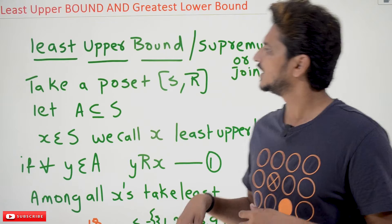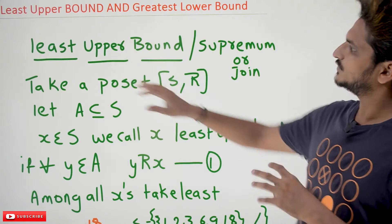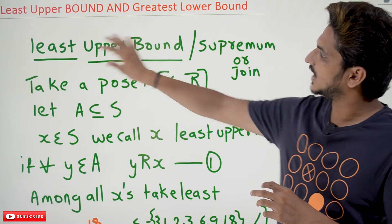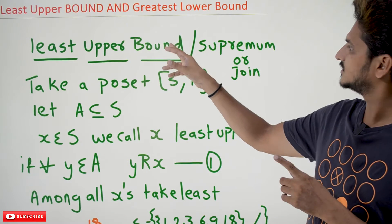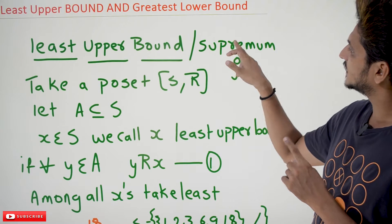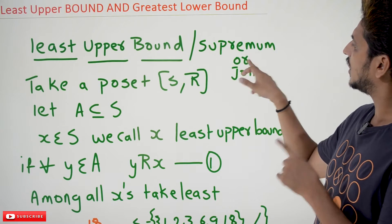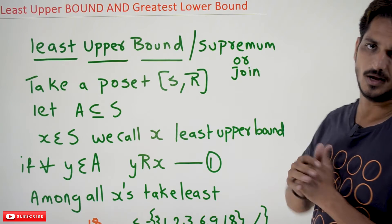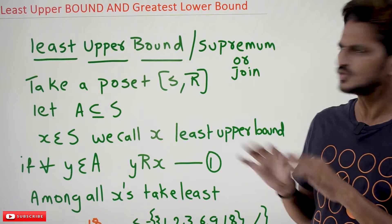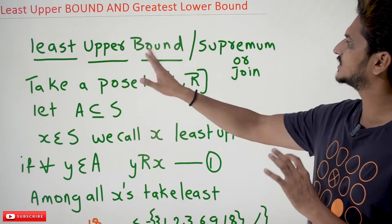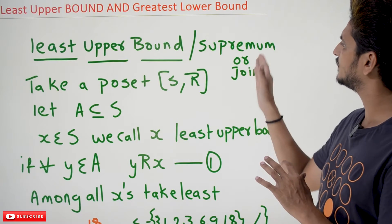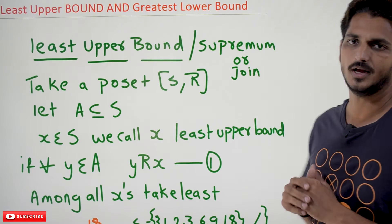Coming to today's class, what is meant by Least Upper Bound? The other name for this is Supremum or Join. You can call it with any of these names: Least Upper Bound, Supremum, or Join.